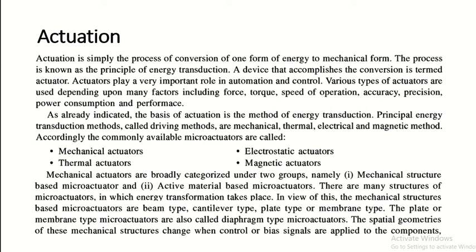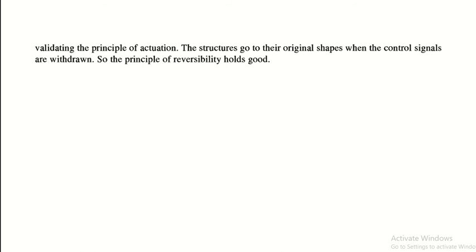Generally, in the case of pressure gauges, when we need to measure pressure, we use this membrane type actuator. The special geometries of these mechanical structures change when control signals are applied to the components, validating the principle of actuation. The structures return to their original shapes when the control signals are withdrawn, so the principle of reversibility holds good in this application.